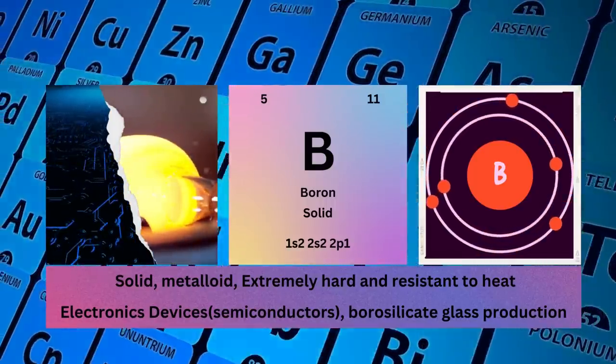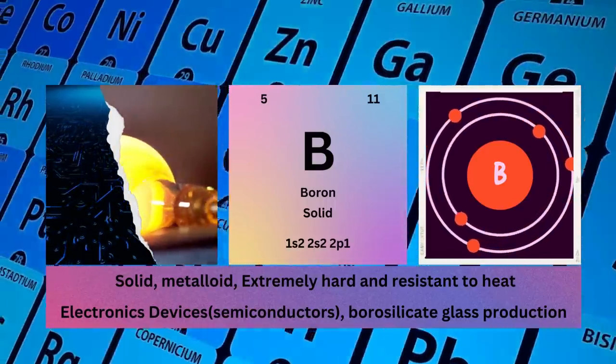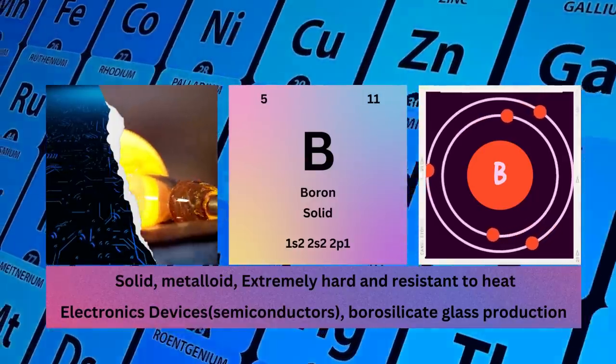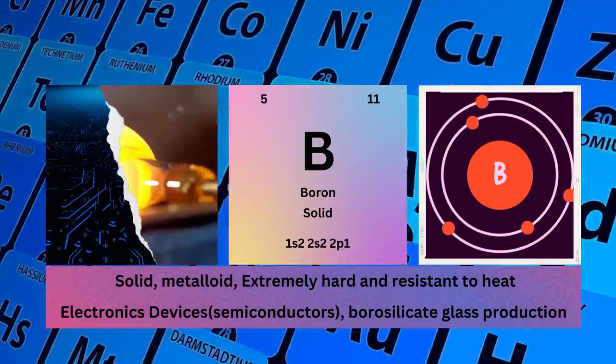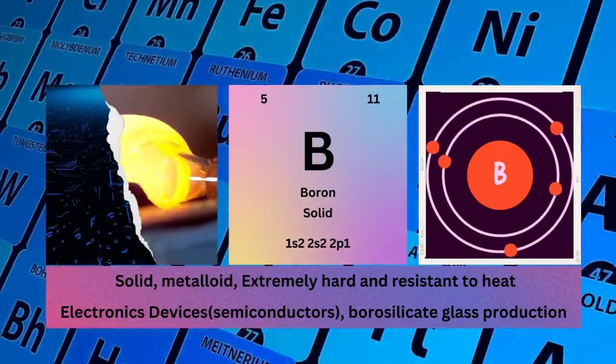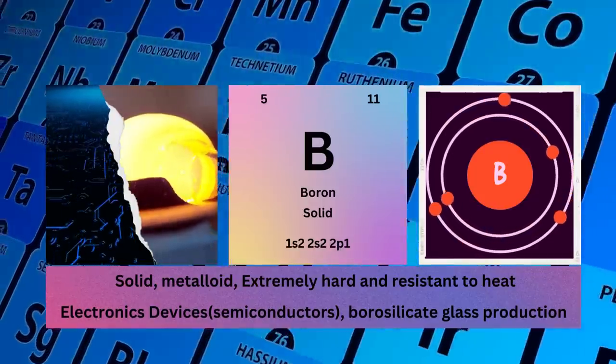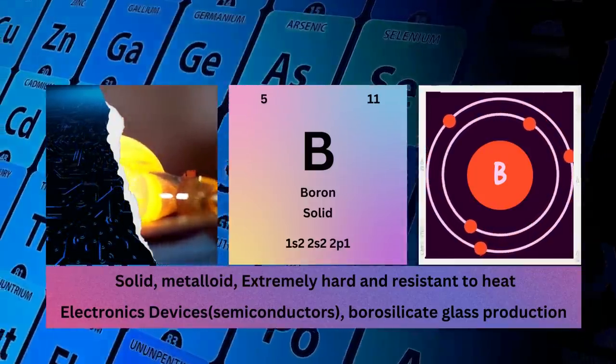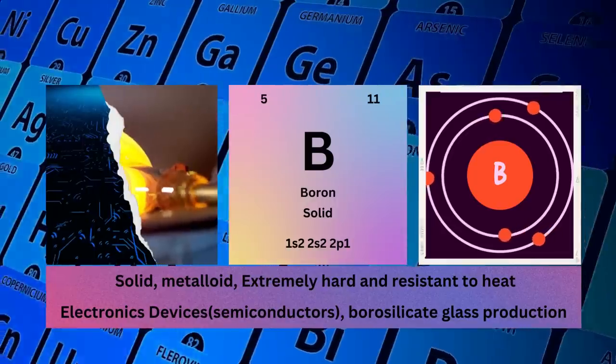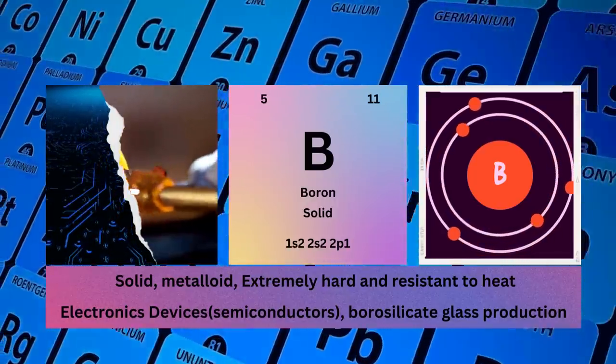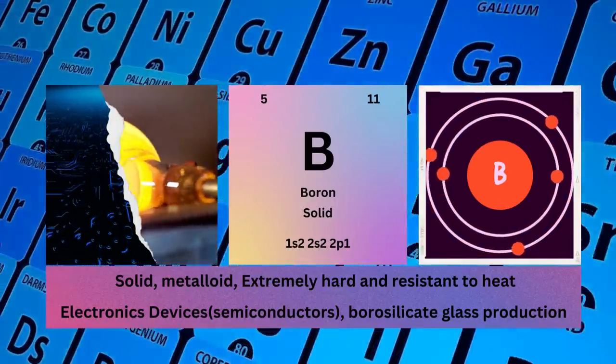Symbol B, state solid, electronic configuration 1s2 2s2 2p1. Physical properties: solid metalloid, extremely hard and resistant to heat. Boron uses: in electronic devices due to semiconductor properties and in borosilicate glass production.